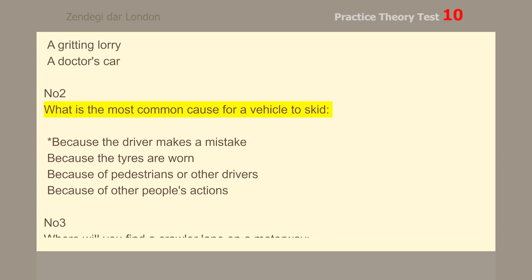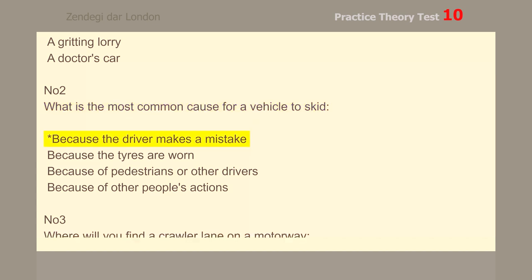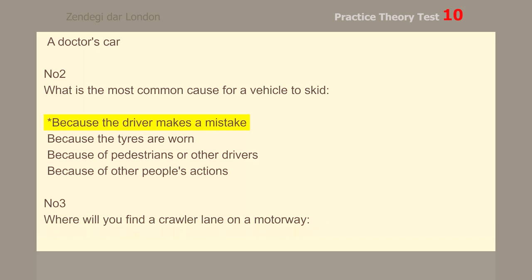Number 2. What is the most common cause for a vehicle to skid? Because the driver makes a mistake.